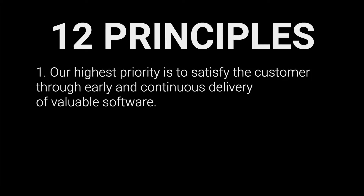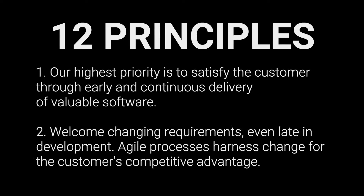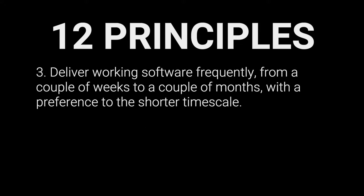The principles of the Agile Manifesto: Principle 1 — Our highest priority is to satisfy the customer through early and continuous delivery of valuable software. Principle 2 — Welcome changing requirements, even late in development. Agile processes harness change for the customer's competitive advantage. Principle 3 — Deliver working software frequently, from a couple of weeks to a couple of months, with a preference to the shorter timescale.